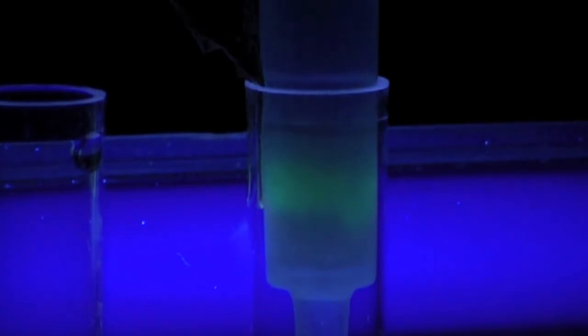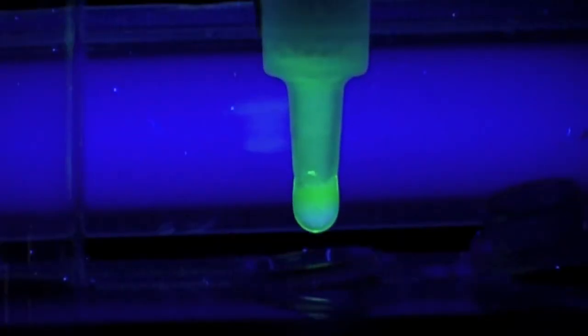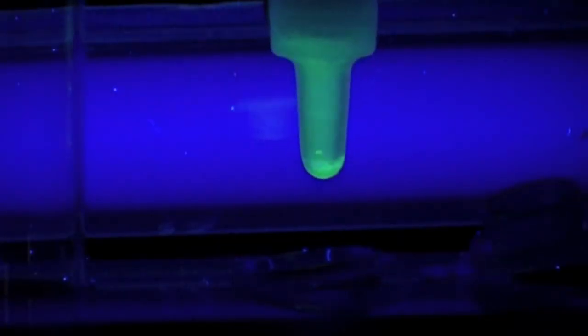Observe as the band of GFP moves down the column. As the first drops of GFP appear at the tip of the column, you may wish to collect the sample in a microtube for more convenient storage.